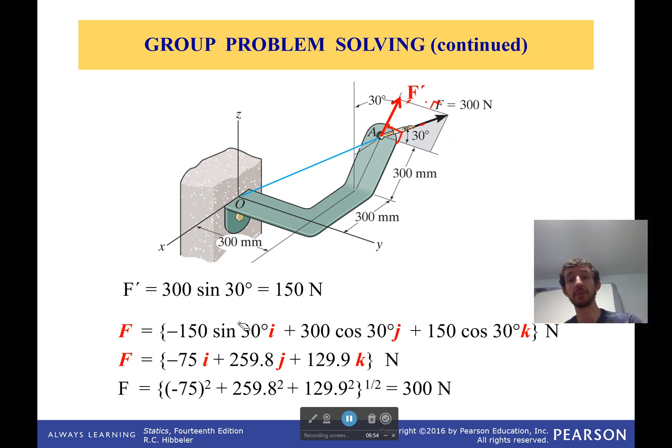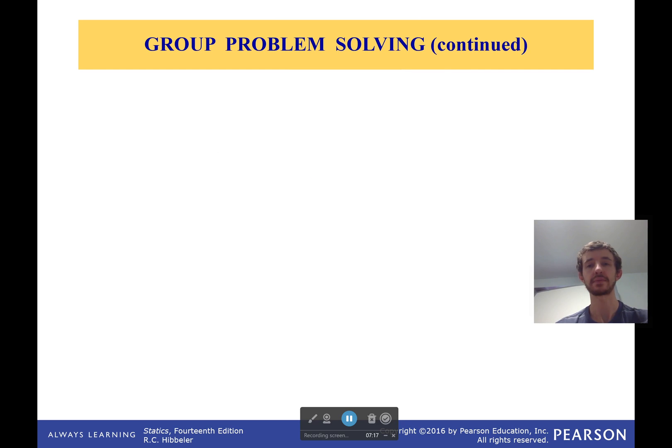So we have all three components because we're just going to break it up into another two-dimensional problem to solve for the rest of the components. And once we've done that, we get our force vector. And then we take the magnitude of that force vector, which of course should be 300 because that's 300. And having solved for that, we can then finish our problem.